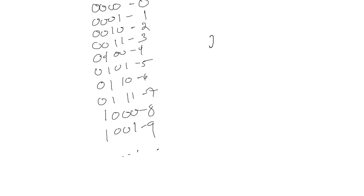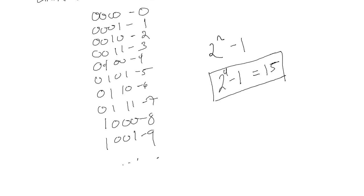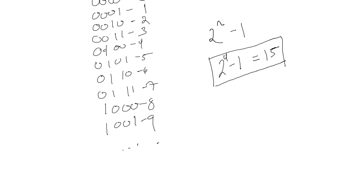Just as a side note, if you want to calculate the maximum number of values, you take your base to the power of your number of digits, minus 1 to adjust for zero. So with 4 digits, 2 to the 4th minus 1, we could count up to 15. But in BCD we stop at 9, so we're losing information, which means BCD takes more data. That's the primary limitation of BCD.